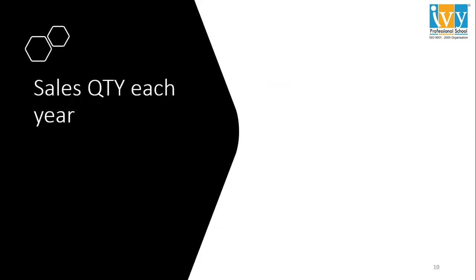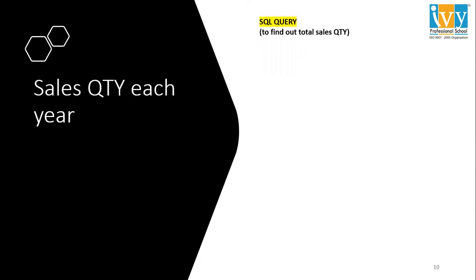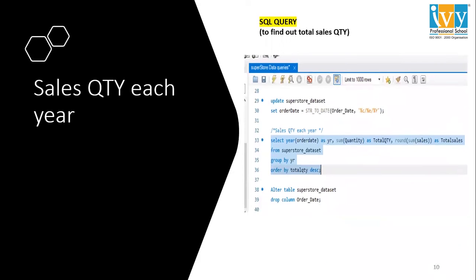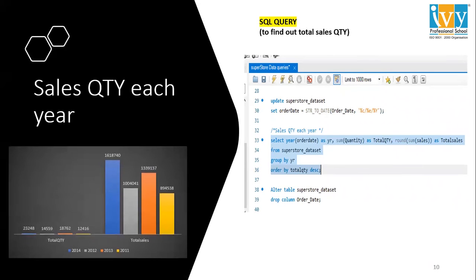Moving forward to sales quantity for each year — this is the query I have mentioned. We need to find the sales quantity for each year, so we mention the year, not the date. I have mentioned the query and grouped it by year. This is the graphical representation for the same.